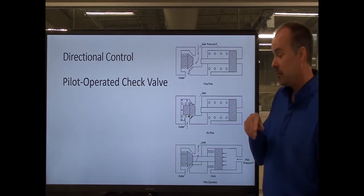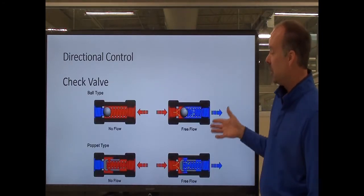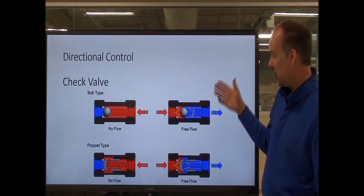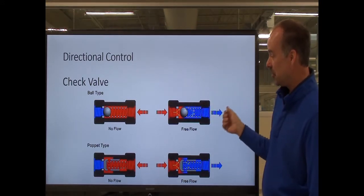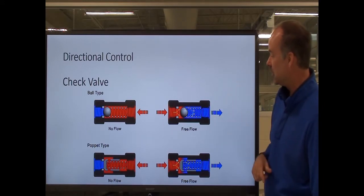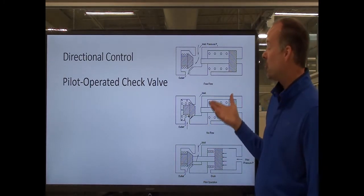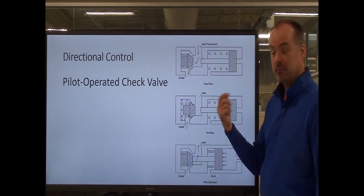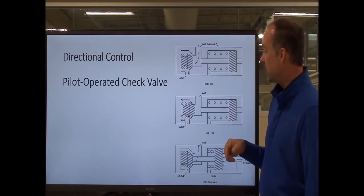Another type of check valve is the pilot-operated check valve. A standard check valve just allows the fluid to flow in one direction and seals it off in the other. A pilot-operated check valve has an override line that will actually allow fluid to flow in both directions when an override is activated.